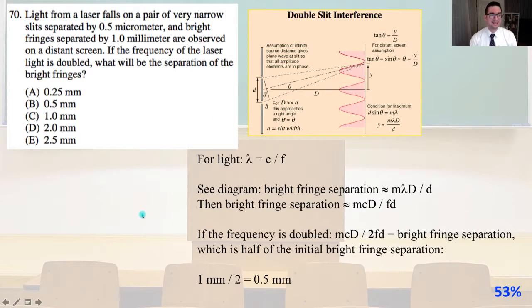Number 70, light from a laser falls on a pair of very narrow slits separated by 0.5 micrometer and bright fringes separated by 1 millimeter are observed on a distant screen. If the frequency of the laser light is doubled, what will be the separation of the bright fringes? So for light, we know λ equals c/f. And we're going to look at our diagram provided here.